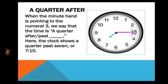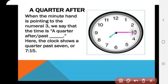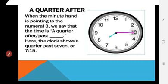Two things you have to learn today: quarter past and half past. When the minute hand is pointing to three and the hour hand is pointing to seven, it is seven fifteen — that means quarter past seven. If it shows quarter past six, that means 6:15.